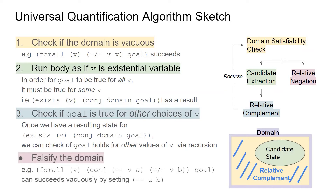Finally, another way to satisfy a for-all goal not covered by steps 1, 2, 3 is that sometimes we can falsify the domain by cleverly setting our logic variables. For example, the goal for-all v: B equals A, v not equal to B can succeed vacuously by setting A equals B. This is called relative cut negation in the paper, and we won't go into details in the talk.